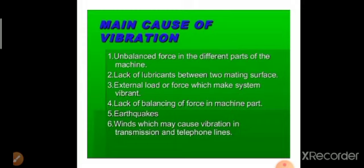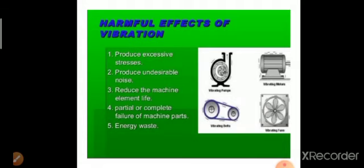The main causes of vibration include: unbalancing in the system — for example, after driving a car for a certain number of kilometers, imbalance develops causing vibration; lack of lubricants between two mating surfaces; external loads or forces that make the system vibrate; lack of balancing — we generally balance vehicles to reduce vibrations; earthquakes; and winds, which may cause vibration in transmission and telephone lines.